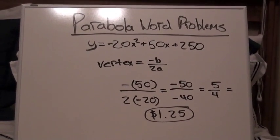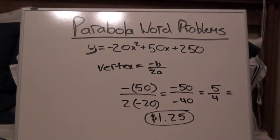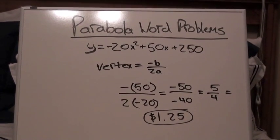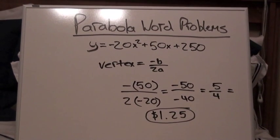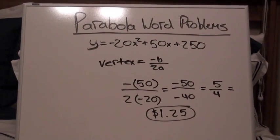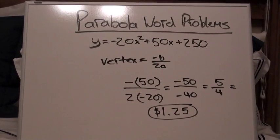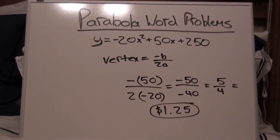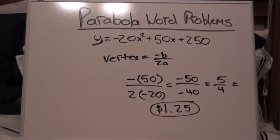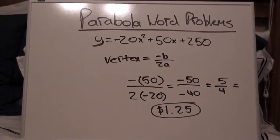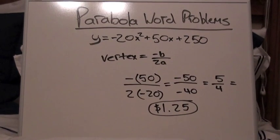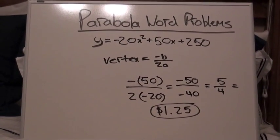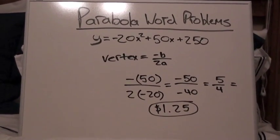Now, if we set our parabola into this formula, we get -50 over 2 times -20. This then comes out to be -50 over -40, which then equals 5/4, which ultimately equals $1.25.